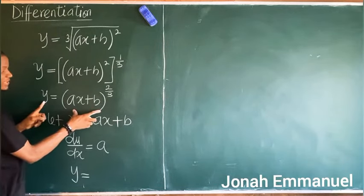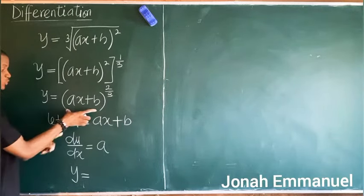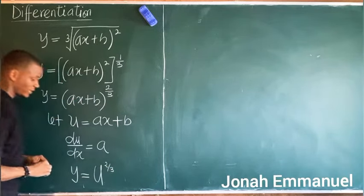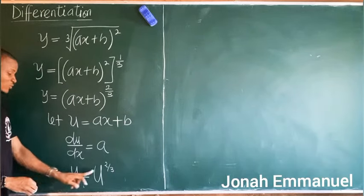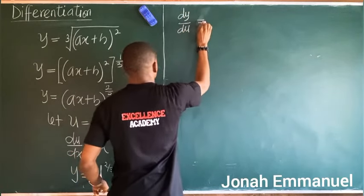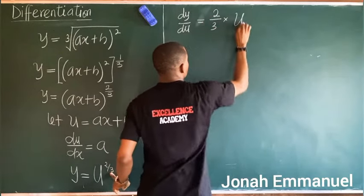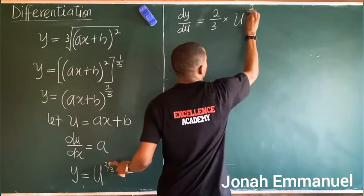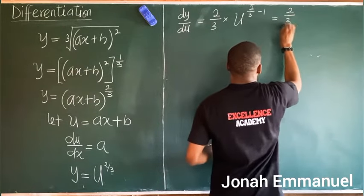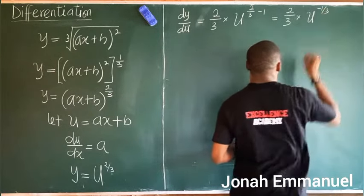Now, y equals u to the power two over three. Differentiating y with respect to u: dy/du equals multiply by the power, giving two over three times u to the power (two over three minus one), which equals two over three times u to the power minus one over three.